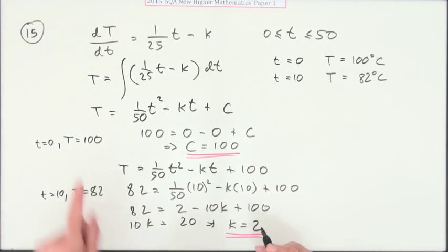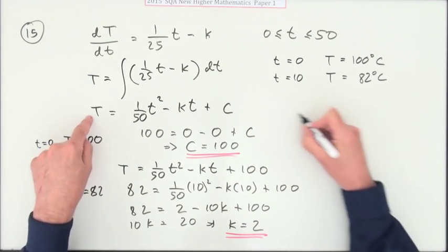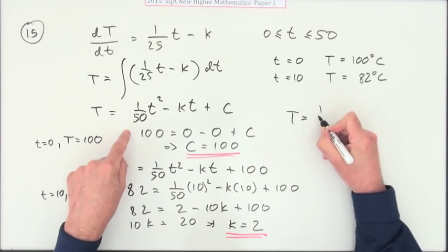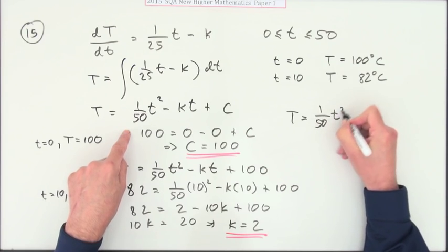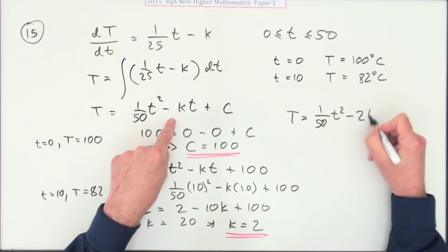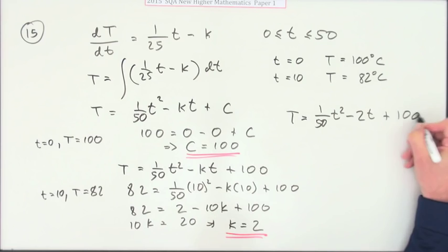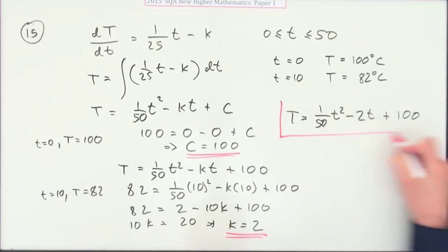So if it says express big T in terms of little t, then it would be this: the temperature is 1/50 of t squared minus 2 times t plus 100. There we go.